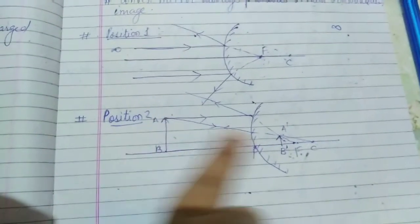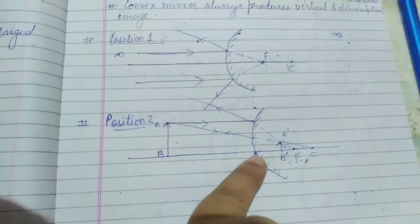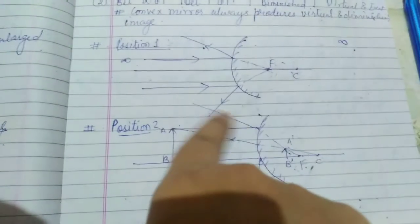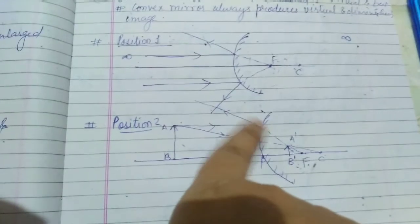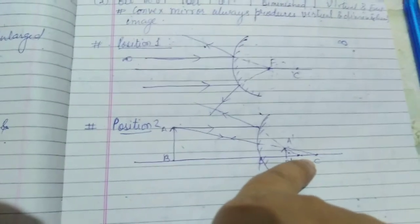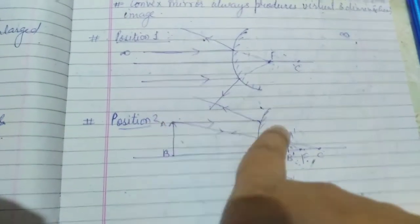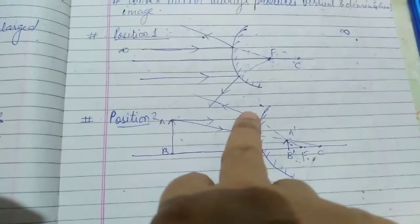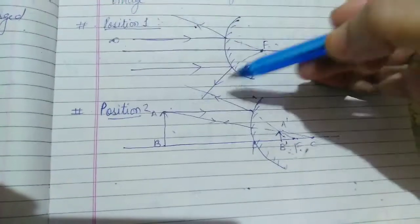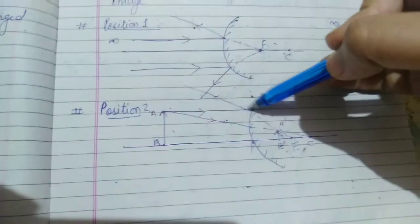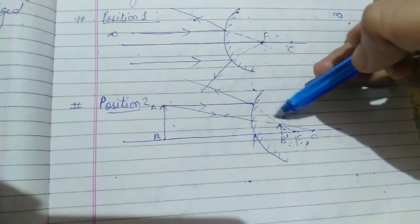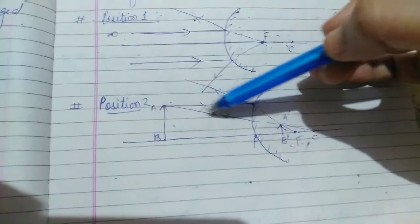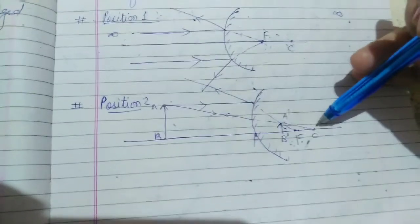Now for Case 2, the object is placed between infinity and pole P. One ray is taken parallel to the principal axis, so after reflection it diverges. When we trace the path of this reflected ray, it passes through the focus F, according to the rule: if an incident ray is parallel to the principal axis, after reflection it appears to pass through the focus.